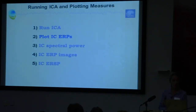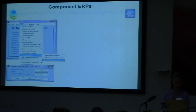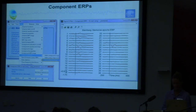Now I'll go through different plotting options for ICA components. For component ERPs, the simplest way is to look at them in the rectangular array. You can choose all the components and very quickly see what ERPs look like for all the different components, and you might be able to find something interesting at a glance.